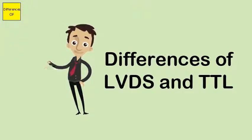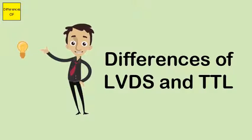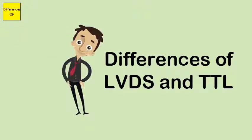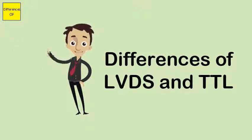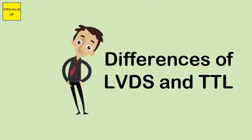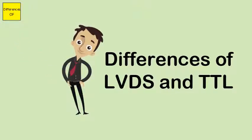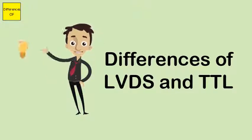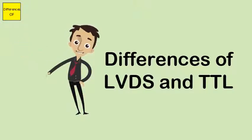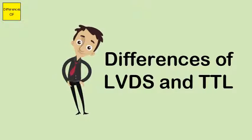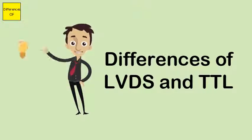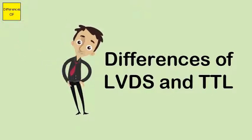TTL uses the presence or absence of a voltage with respect to a ground to indicate a 1 and a 0, respectively. LVDS uses two wires with the voltage difference between the two determining whether it is a 0 or a 1.